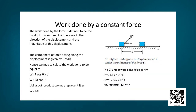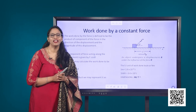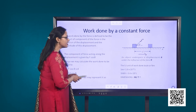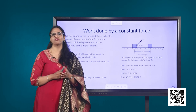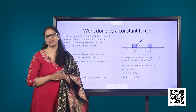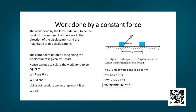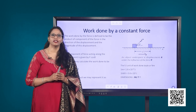The SI unit of work done is Joule or Newton meter. There are other units of work done as well, like Ergs, electron volt, and kilowatt hour. The dimensional formula of work done is M L squared T to the power minus 2. The work done is a scalar quantity. It can be positive, negative, or zero.